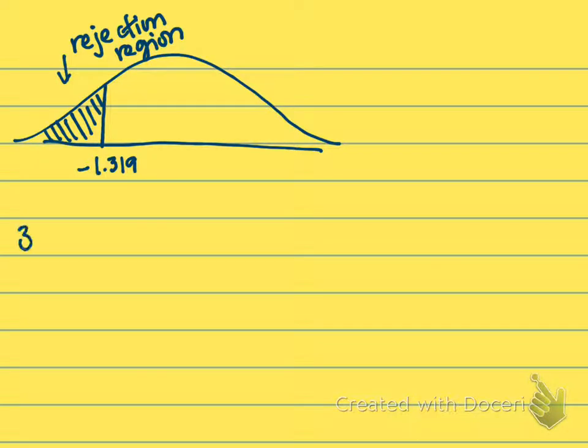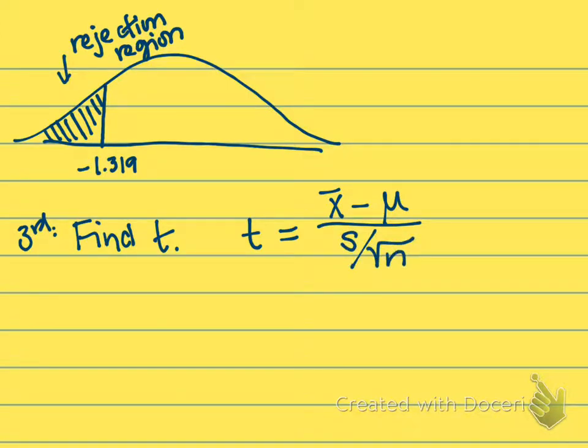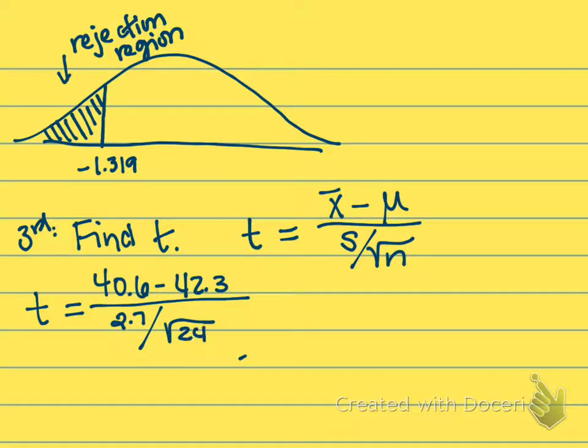That takes me to my third step here, which is to find t. We've got to find that statistic for the sample. Our equation from the last chapter: t equals the sample mean minus the population mean divided by the sample standard deviation, which is divided by a square root of our sample size. For this question, we would have t equals 40.6 minus that 42.3 that we're testing. Our standard deviation was 2.7 minutes, and our sample here was a size of 24.